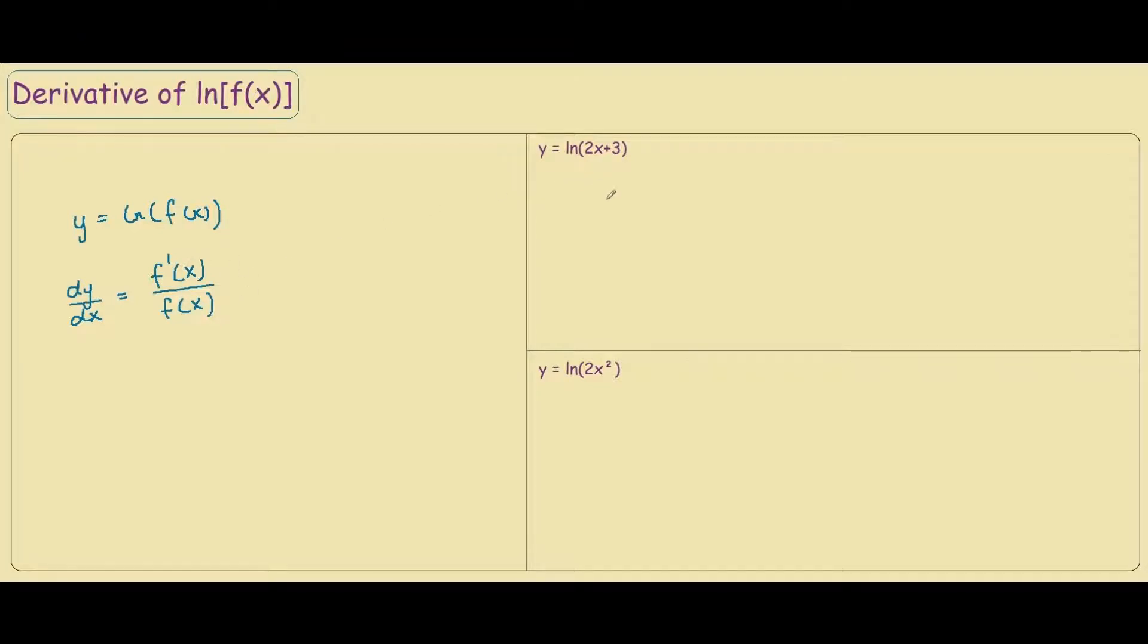So if we were to use this formula on this example, the derivative would be the derivative of f, so in this case f equals 2x plus 3. So the derivative of f would be 2.